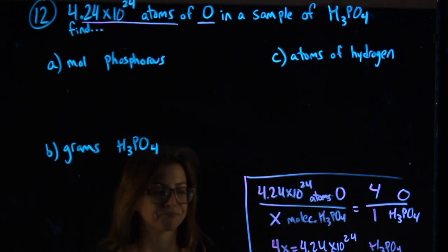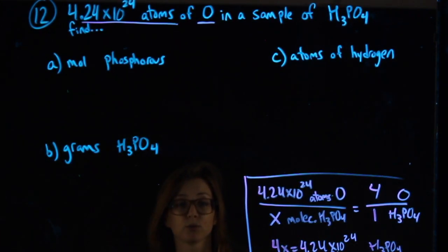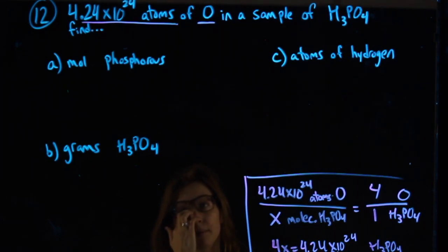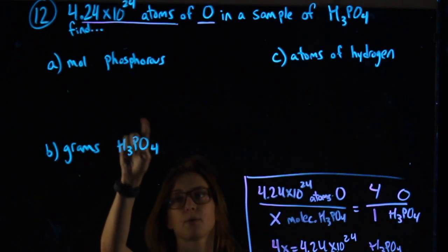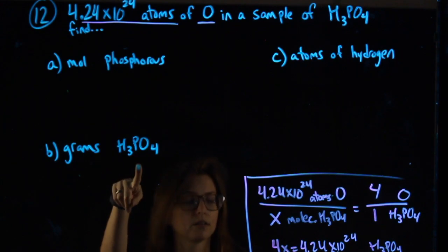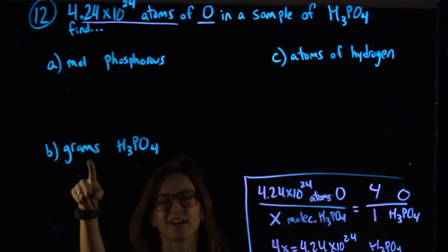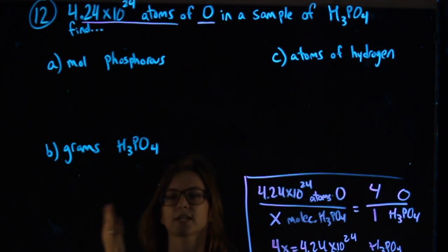I have my molecules of the whole thing. I'm going to come over to part B because part B is about the whole thing. From molecules, I can't find grams right away. But from molecules I can get to moles. From moles I can get to grams.